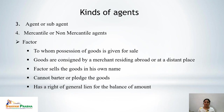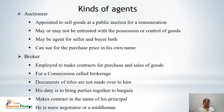Among mercantile agents, the first is the factor — a person to whom possession of goods is given for sale. Goods are consigned by a merchant residing abroad or at a distant place. The factor generally sells the goods in his own name. Importantly, a factor cannot barter or pledge the goods; he only has a right of lien for the balance of the amount, which he can exercise in case of default by the principal.